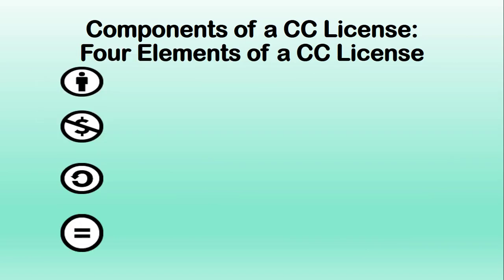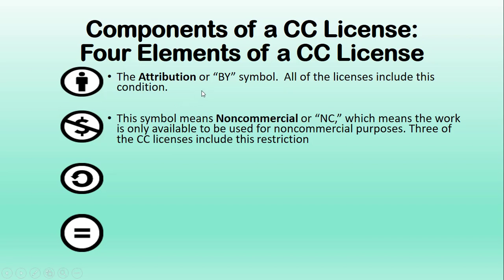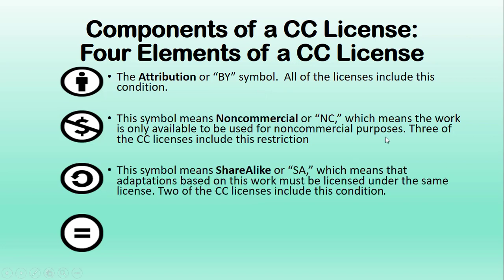There are four elements of a CC license. First is the attribution symbol — all licenses include this condition. Next, the symbol for non-commercial or NC means the work is only available to be used for non-commercial purposes; three of the CC licenses include this restriction. The share-alike or SA symbol means that adaptations based on this work must be licensed under the same license or a compatible license; two of the CC licenses include this condition.